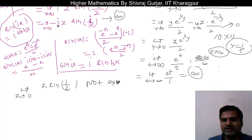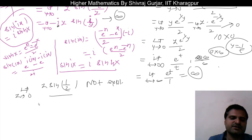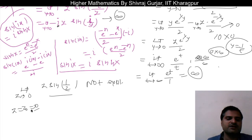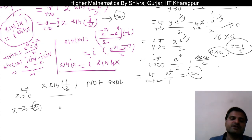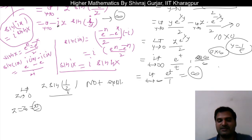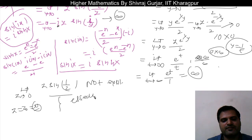So the limit as z tends to 0 of z·sin(1/z) does not exist — one approach gives 0 (along the real axis) and another approach gives infinity (along the imaginary axis). Since the limit does not exist, z = 0 is not a removable singularity. Also, since the function takes value 0 (not infinity) at some approaches, it is not a pole either. Therefore z = 0 must be an essential singularity.